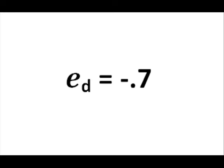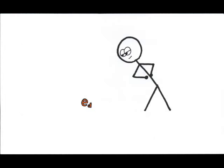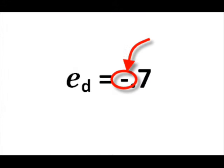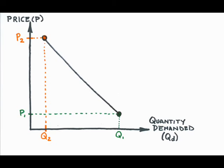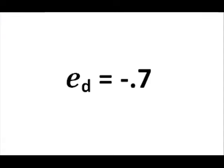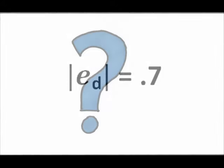The critical component to look at when dealing with elasticity of demand is the magnitude — how big is this number? The bigger the number, the more people respond to price. The smaller the number, the less people respond to price. The fact that the number is negative only signifies the inverse relationship between price and quantity demanded. Since I care about the size of the elasticity number rather than the sign, let's look at the absolute value of elasticity of demand. In this example, the absolute value is 0.7 — but what does this number really tell us?